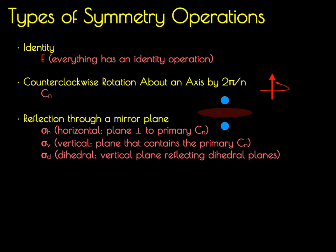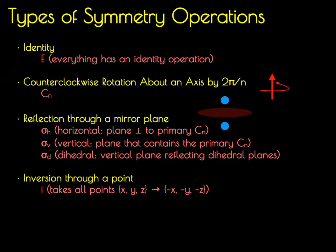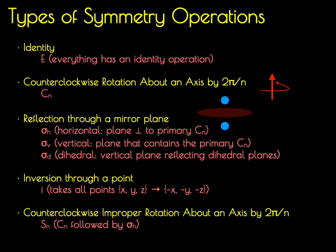A fourth symmetry operation is an inversion through a point, symbolized with a lowercase i. This inversion operation takes all points x, y, z on a Cartesian axis system and converts them to negative x, negative y, and negative z. The fifth type of symmetry operation is something that's a little bit difficult to see in most molecules — it's called a counterclockwise improper rotation about an axis by 2π over n, symbolized with S subscript n. This rotation performs a proper counterclockwise Cn rotation and then reflects the points through a horizontal mirror plane perpendicular to that primary Cn.